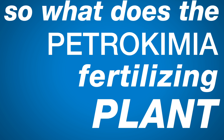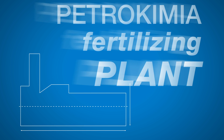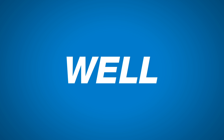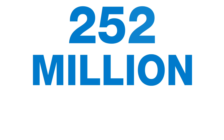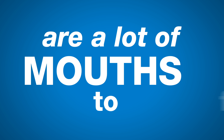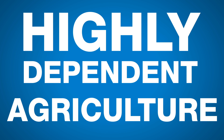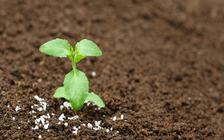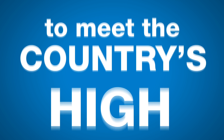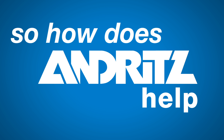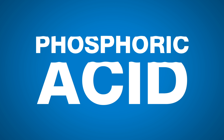So what does the petrochemical fertilizing plant in Gresik have to do with population rankings? Well, 252 million people are a lot of mouths to feed. And in a country highly dependent on agriculture, a fertilizing plant needs to produce enough phosphoric acid to meet the country's high agricultural demands. So how does Andritz help farmers and industrials reach outputs of phosphoric acid over 200,000 tons?